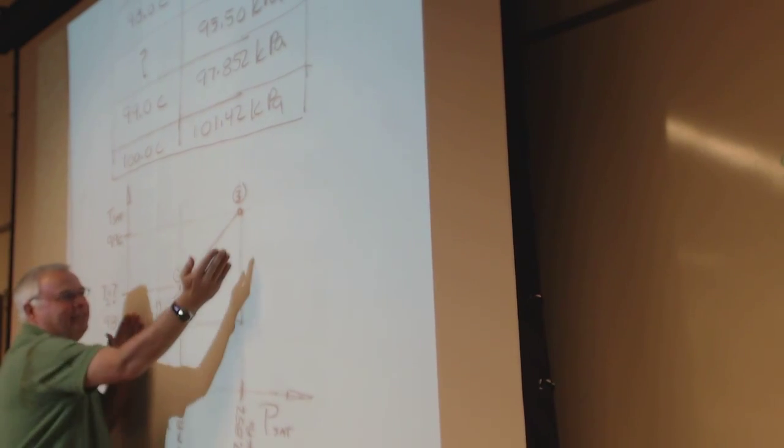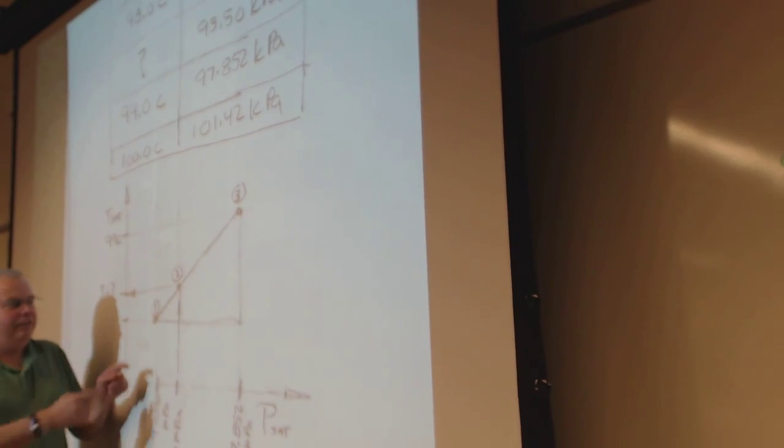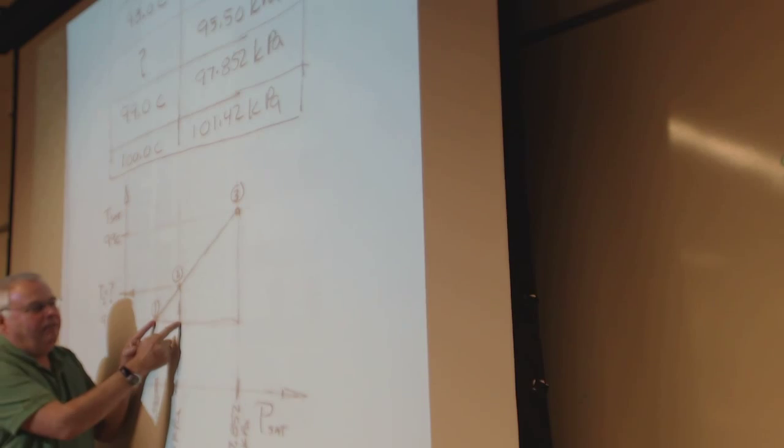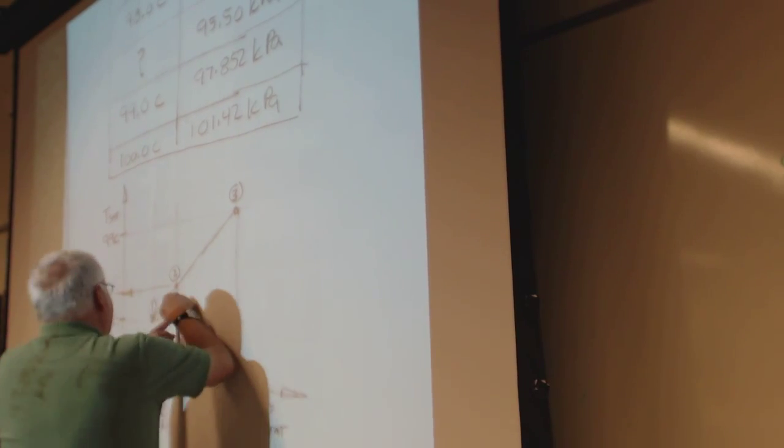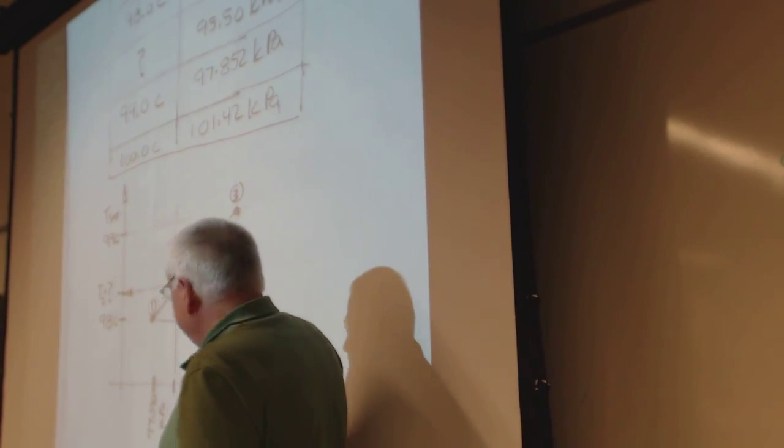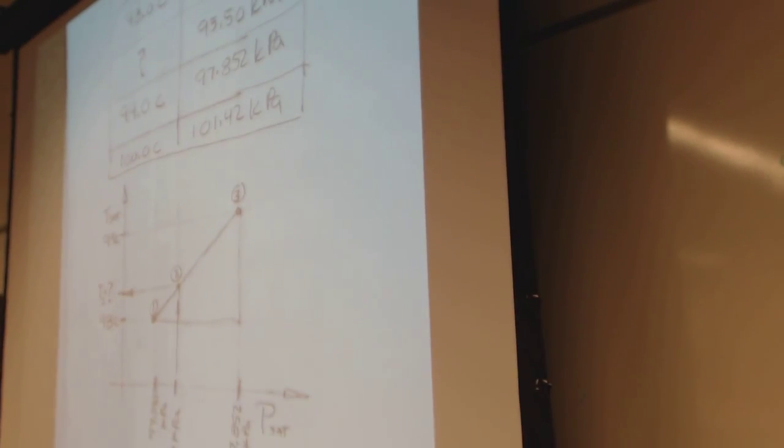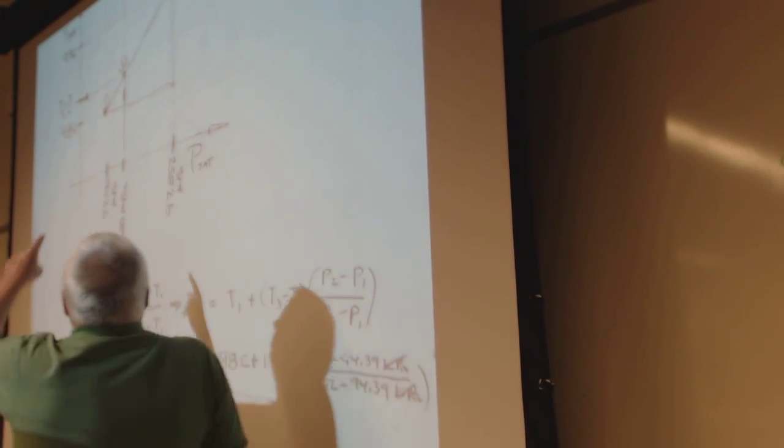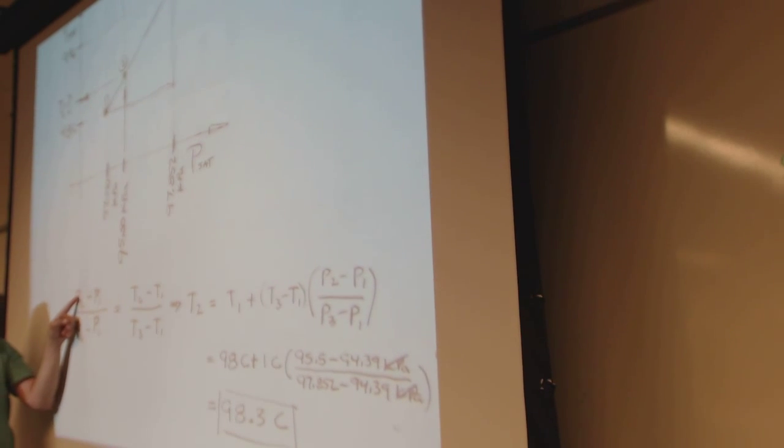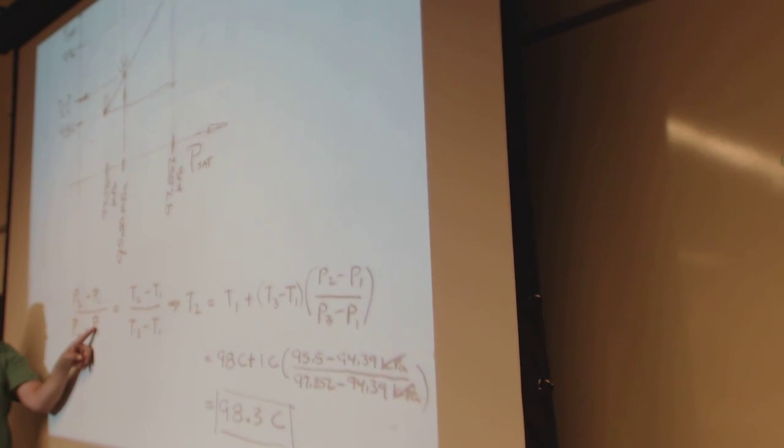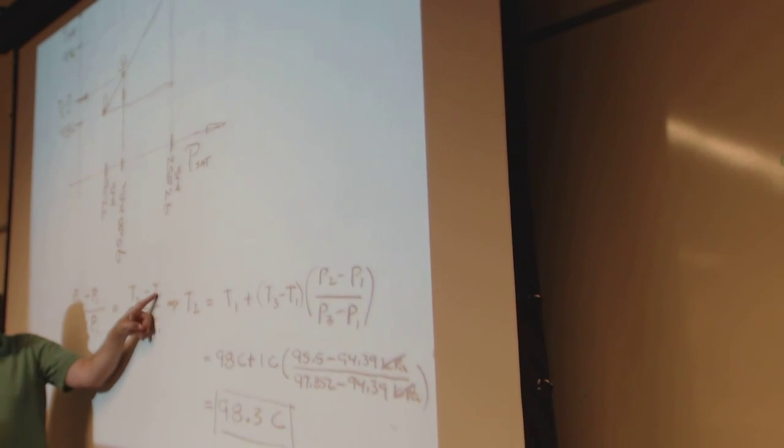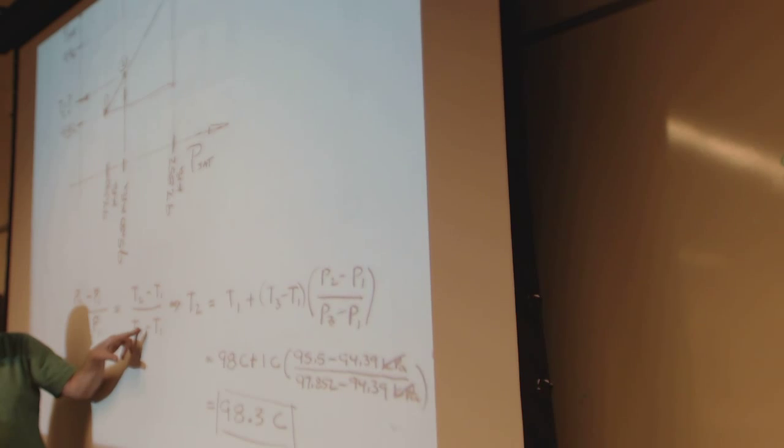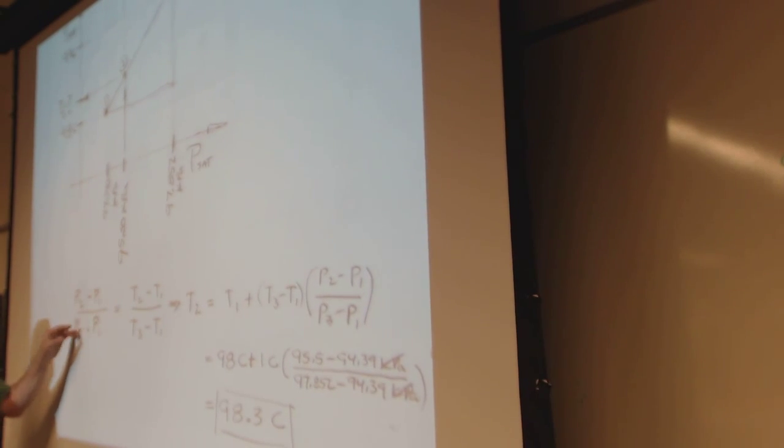Isn't this triangle the same shape as that triangle? So, if this is 40% of that, then this would be 40% of that. But it isn't 40%. So the way the interpolation thing works is P2, the point in the middle, the one you want to know, minus the low, over the high minus the low, equals the temperature you want to know over the low. This distance, this proportion, this is the same proportion. We're basically saying that the horizontal proportion is the same as the vertical proportion.